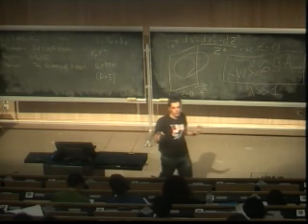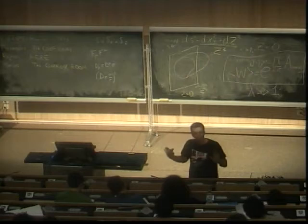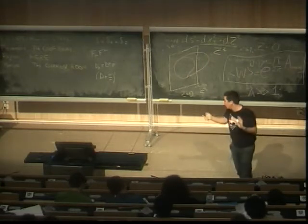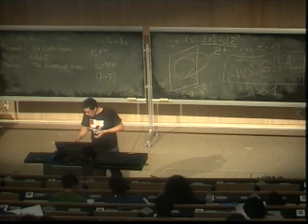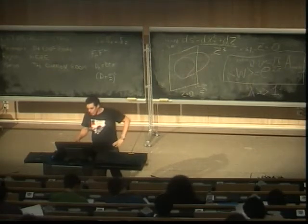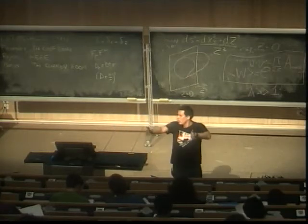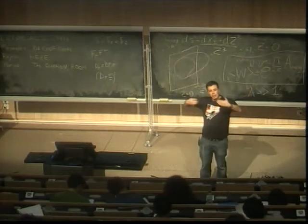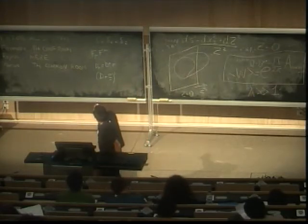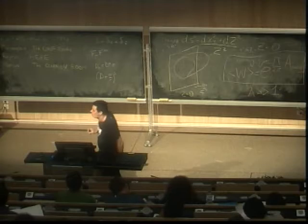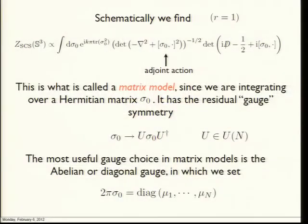At the end of the day, you integrate over all saddle points — labeled by the constant matrix σ₀ — and what you integrate is the full action evaluated on the fixed point times the one-loop fluctuations. The partition function of super-Chern-Simons theory on S³ is given by an integral over a constant field σ₀, with an action term from super-Chern-Simons and the one-loop determinants. This is a matrix model: we integrate over a constant Hermitian matrix σ₀ valued in the adjoint representation.